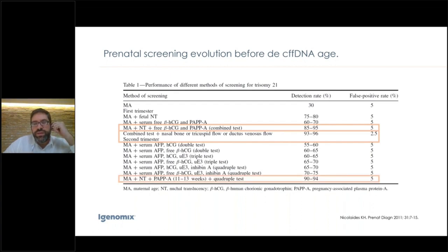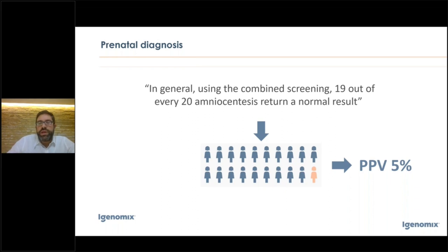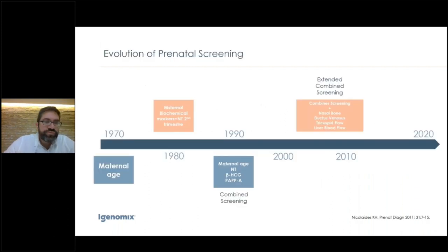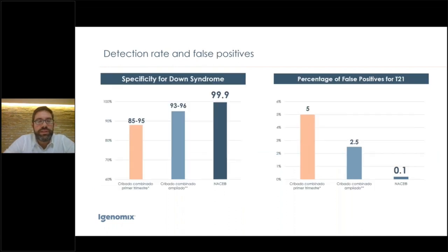The reality is that the most commonly used worldwide screening is the combined screening. Using combined screening, about 19 out of 20 amniocenteses return a normal result — in other words, a positive predictive value of about 5%. From 2011, we were able to analyze cell-free DNA testing, which was a complete revolution in the prenatal diagnosis and screening world.